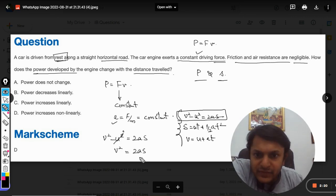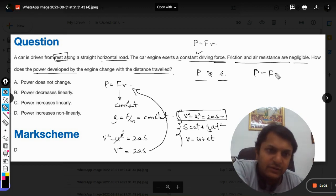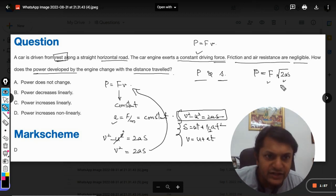We substitute the value of v from this to the power equation. P = F × v, and velocity will be the square root of 2as. So power equals force times the square root of 2as.